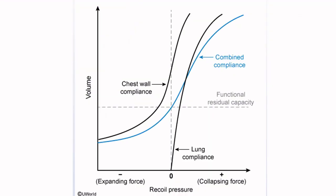With that background in mind, let's go back to the lung compliance curve we saw earlier. This is a curve of volume against pressure. This zero point represents zero pressure. Anything to the right of this vertical line is positive or collapsing pressure; anything to the left is negative or expanding pressure. Naturally, the lungs tend to collapse, so the entire lung compliance curve is found on the right side — positive pressure — while the chest wall tends to expand, so most of the chest wall compliance curve is on the left — negative pressure.